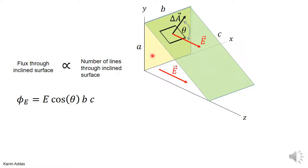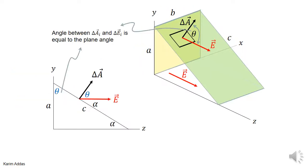We can do this by looking more closely at the cosine theta term. Looking at the inclined surface problem from the side view, we see the z-axis pointing to the right and the y-axis pointing upward. The line we see is the side view of the inclined plane.